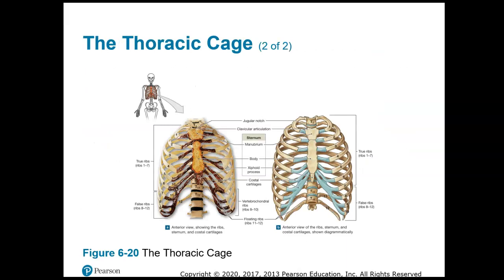Let's look at the thoracic cage. You have the sternum, whose superior portion is called the manubrium. Then there is the body of the sternum, and then the xiphoid process, which is the structure sometimes damaged when you're giving CPR to someone. The entire manubrium, body, and xiphoid process compose the sternum, or breastbone. And then we have 12 pairs of ribs.